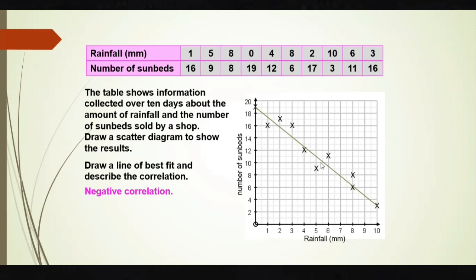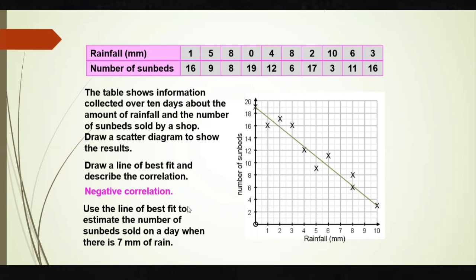This type of correlation is negative correlation. The next question asks: use the line of best fit to estimate the number of sunbeds sold on a day when there is 7 mm of rainfall. We go to 7 mm on the x-axis, draw straight up to the line, then across — and we can see 8. So 8 sunbeds are sold when there is 7 mm of rainfall. These types of questions are asked — do watch it again if not understood, share with your friends, and subscribe to the channel.